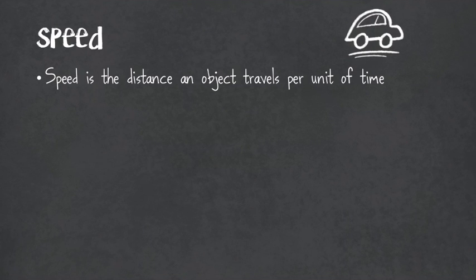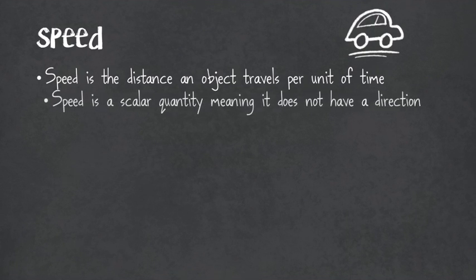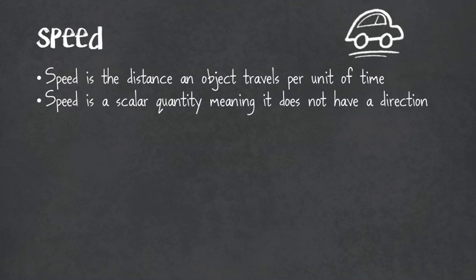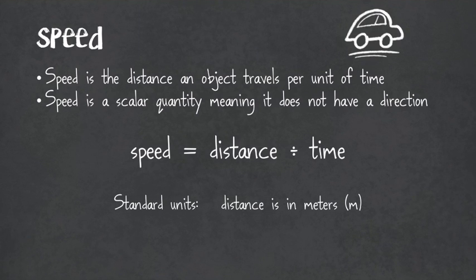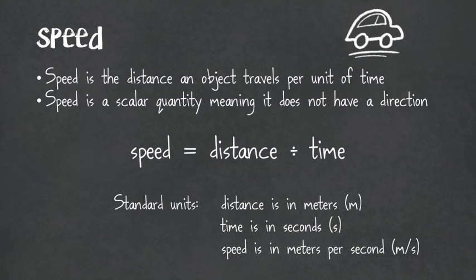So first, speed is the distance an object travels per unit of time. It is a scalar quantity, meaning that we are not going to give it a direction — it doesn't need a direction. Our equation is speed equals distance divided by time. For our general units, we are almost always going to use meters for distance, seconds for time, and speed in meters per second.